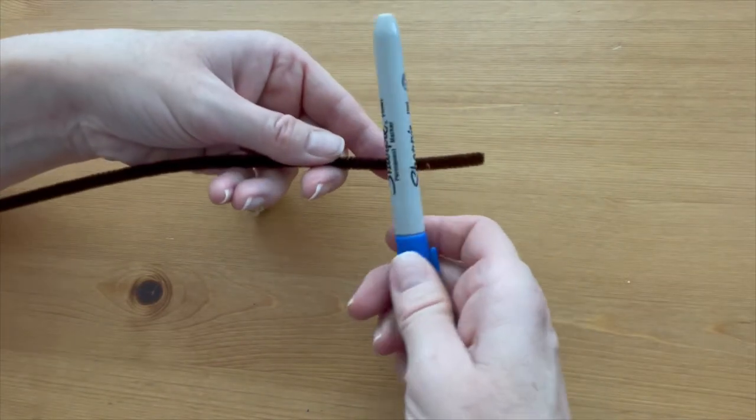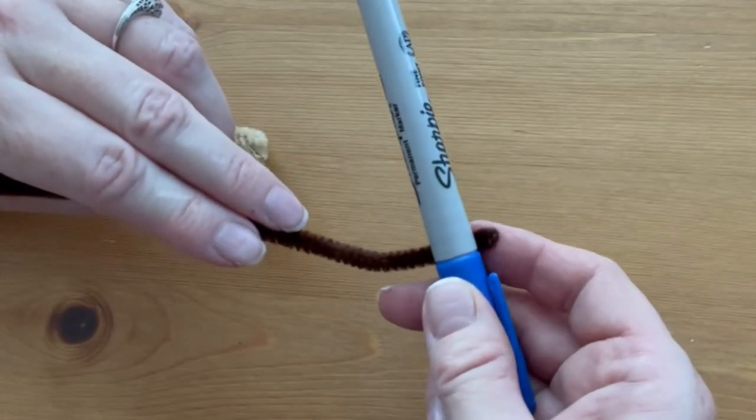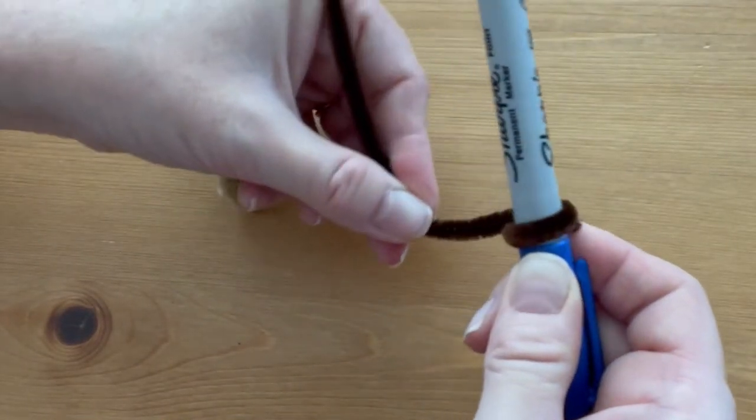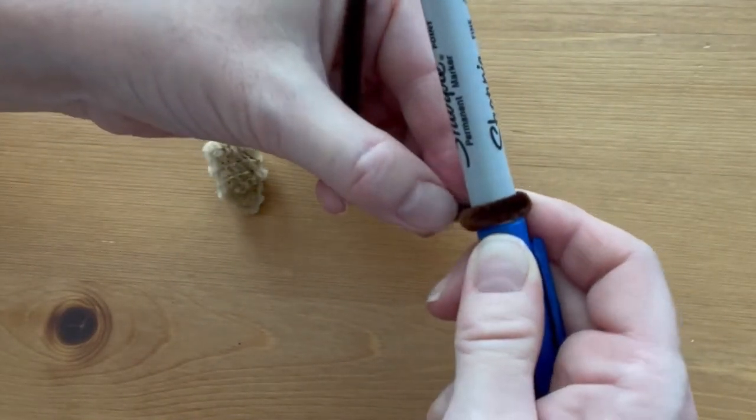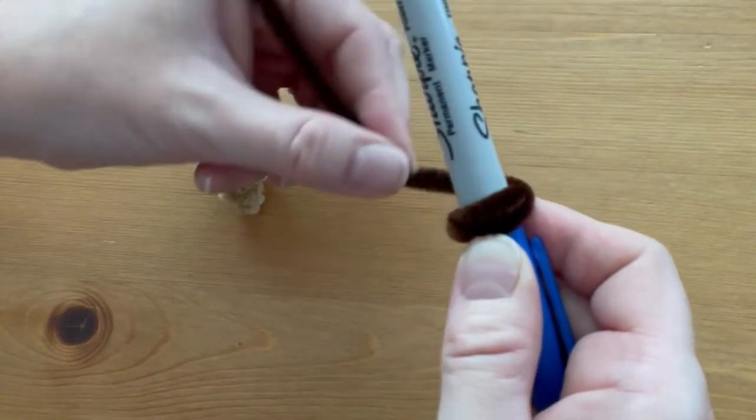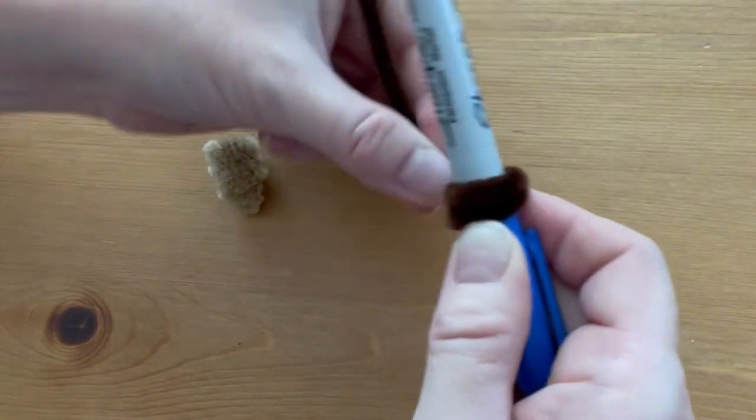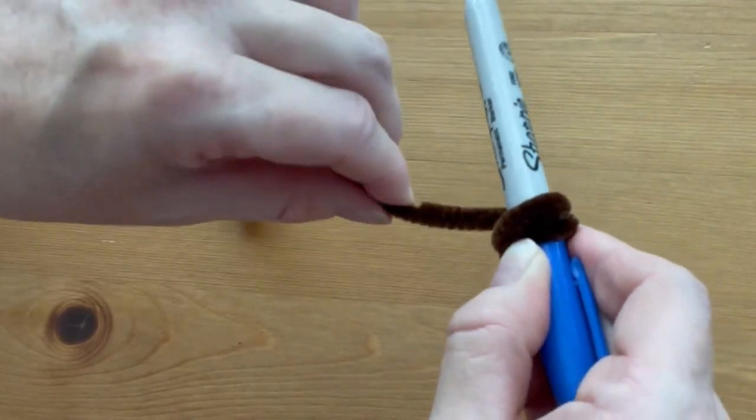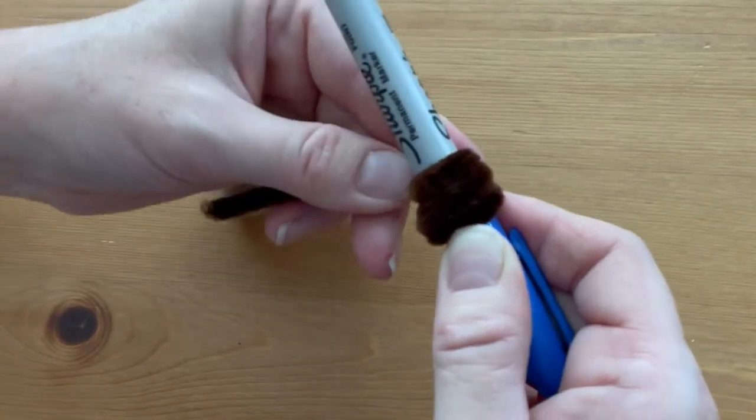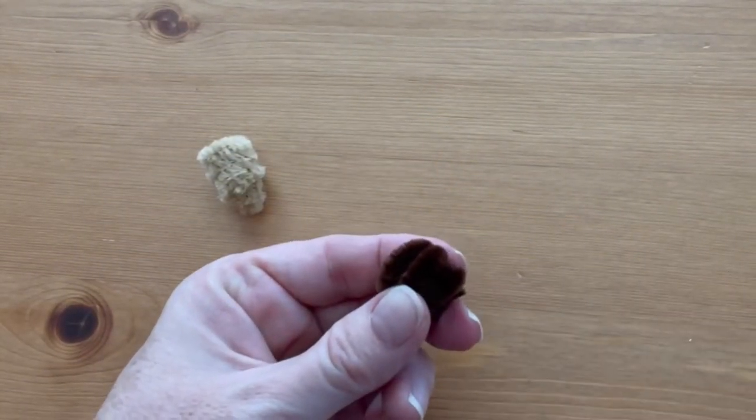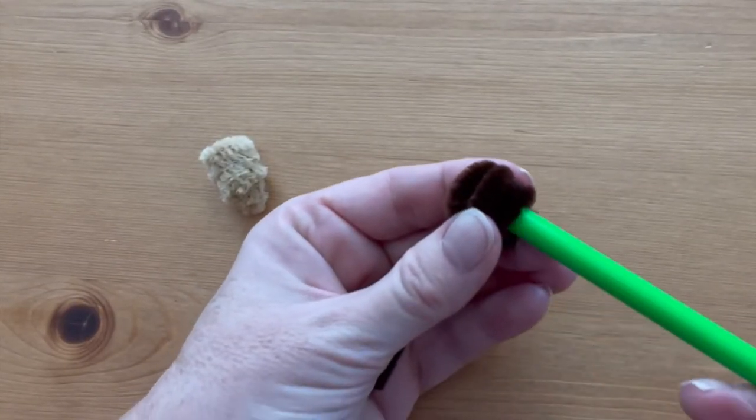To make the top of the acorn, hold a dark brown pipe cleaner against a thick marker and spiral it around, doing the same thing—the first two spirals right on top of the other, and then do it a second time. Then you're going to go once around the marker, hold everything together, and pull the marker out.